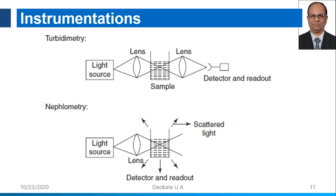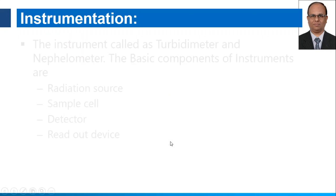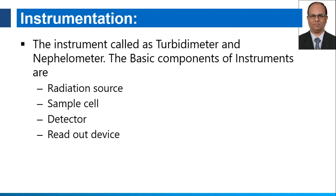Looking at the instrumentation, there are two types of instruments: Turbidometers and Nephelometers. The only difference is in the position of the detector. In the case of Turbidometry, the light source, sample, and detector are placed in the same path at 180 degrees. Whereas in the case of Nephelometry, the light source and the detectors are at right angles to each other, because we are measuring the scattered light. The basic components of the instruments are: radiation source, sample cell, detector, and readout units.